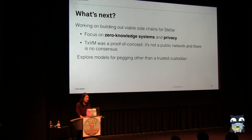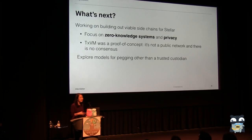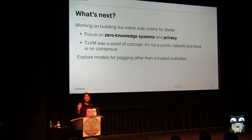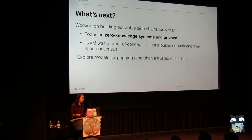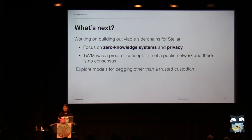In terms of our Slidechain experiment, what we're looking to next is actually building out more robust versions of what we would be pegging to. We're moving funds off of the Stellar network, but we've got to be moving them somewhere. Most of that work for our team is focused on zero-knowledge systems and privacy — systems that allow you to make transactions and broadcast them to the network without people on the network knowing how much money you're paying to whom.